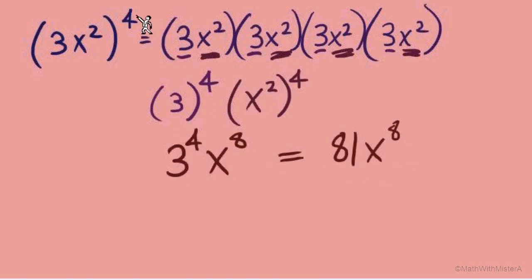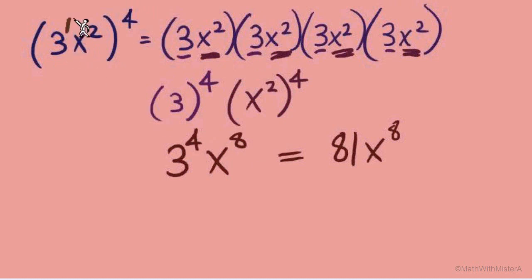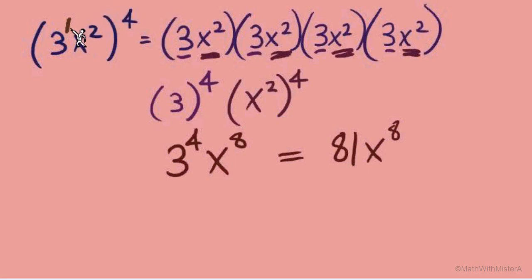I want to point out what's happening here. We said we can take an exponent and multiply it to the exponent inside parentheses — 4 times 2 gave us x to the eighth. But how does 3 become 3 to the fourth? Well, 3 has an implied exponent of 1, so our multiplication rule still works perfectly: 4 times 1 equals 4. We won't always write the 1 there, but if there's no exponent on a base, the outside exponent simply becomes its exponent.